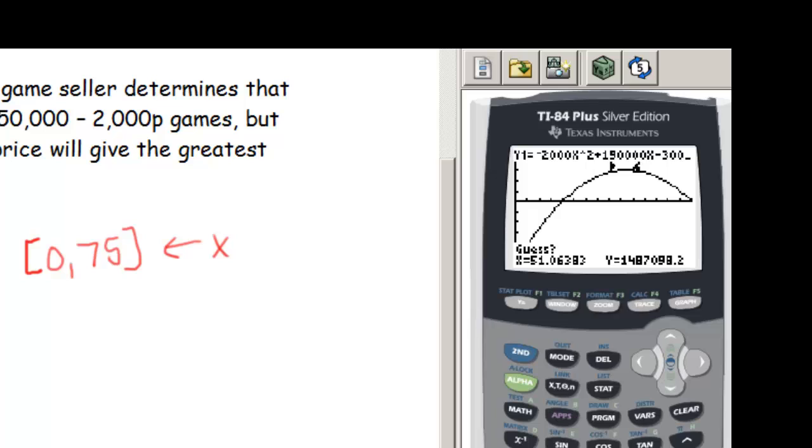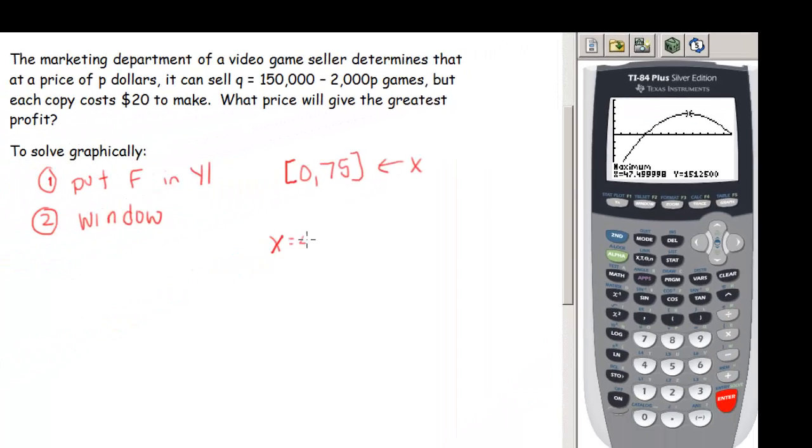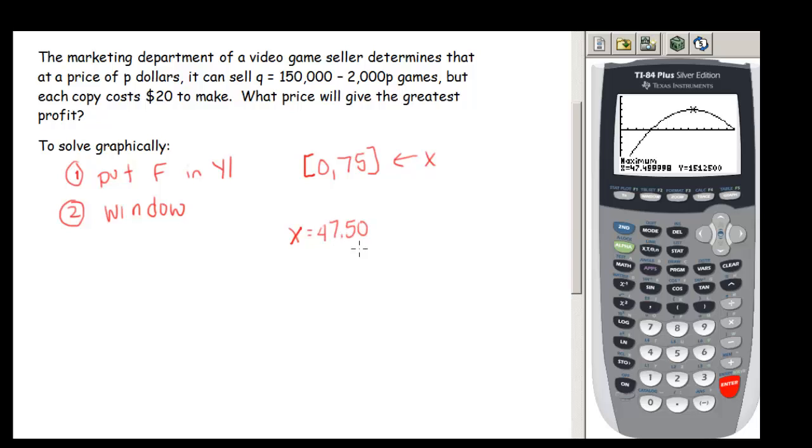And then it asks you for a guess. You can just press enter again. And we're going to need to round here. It tells us that our X value is 47.50, so that means our P is 47.50. And then it tells us our Y value is 1,512,500. So that means our profit or our F is that 1,512,500.